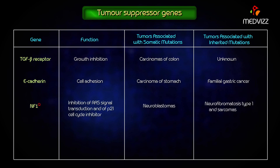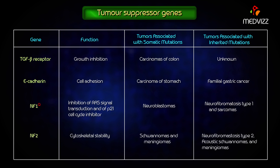NF1, also called neurofibromatosis type 1, functions by inhibiting RAS signal transduction and p21 cell cycle inhibitor. Somatic mutations are associated with neuroblastomas, and the hereditary condition is neurofibromatosis type 1 and sarcomas. NF2, also called neurofibromatosis type 2, functions in cytoskeletal stability. Somatic mutations are associated with schwannomas and meningiomas, and the hereditary condition is neurofibromatosis type 2, causing acoustic schwannomas and meningiomas.